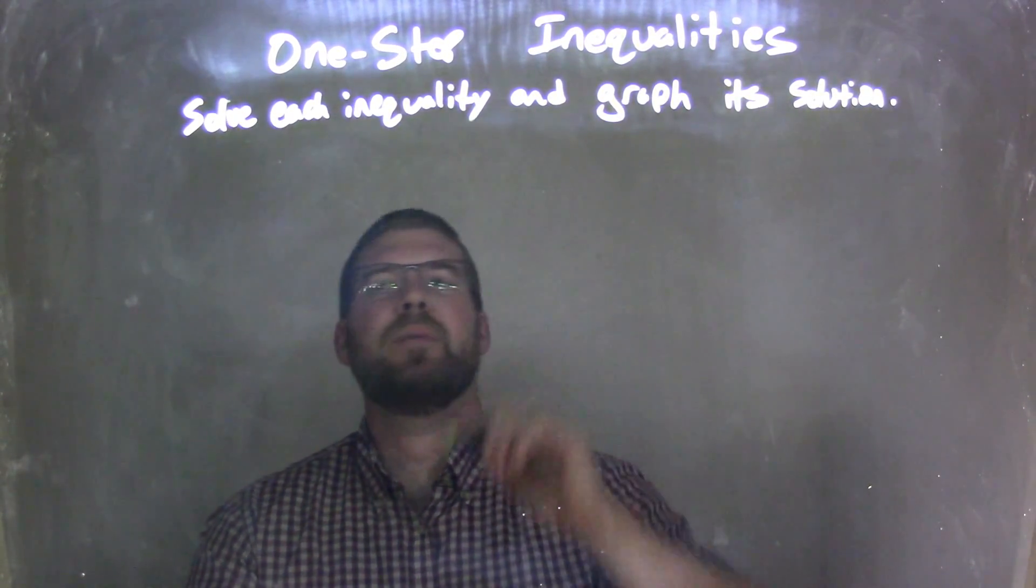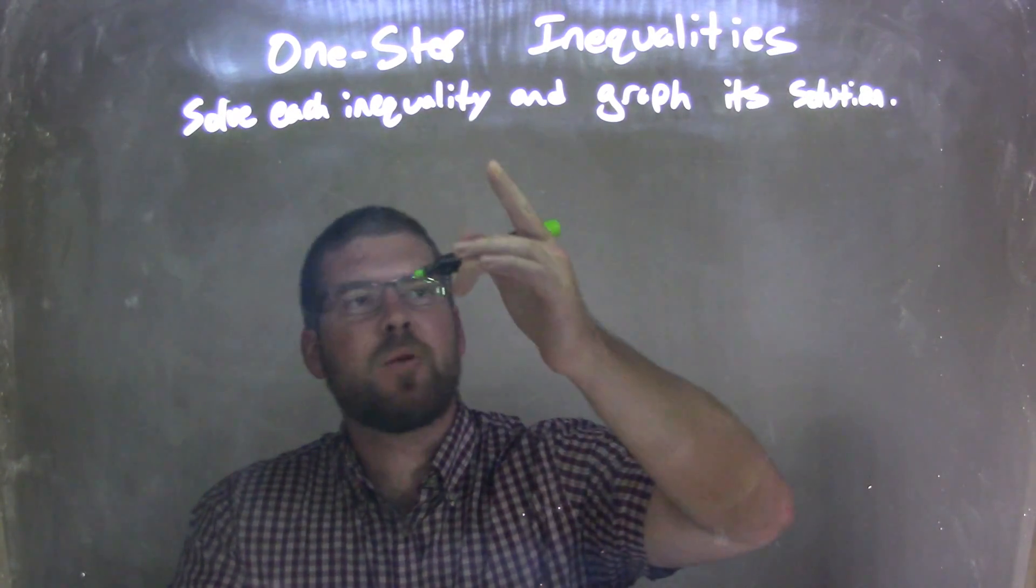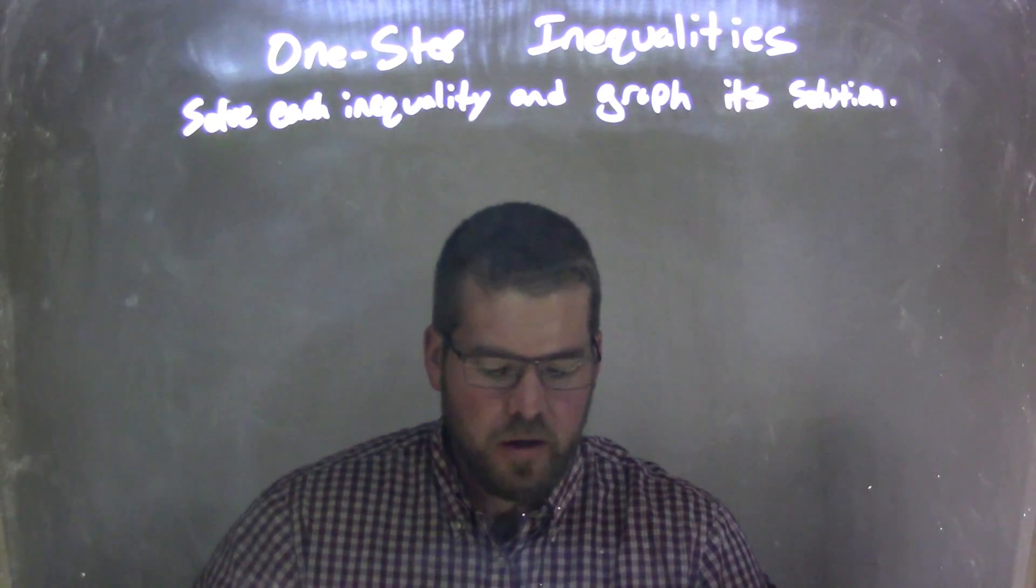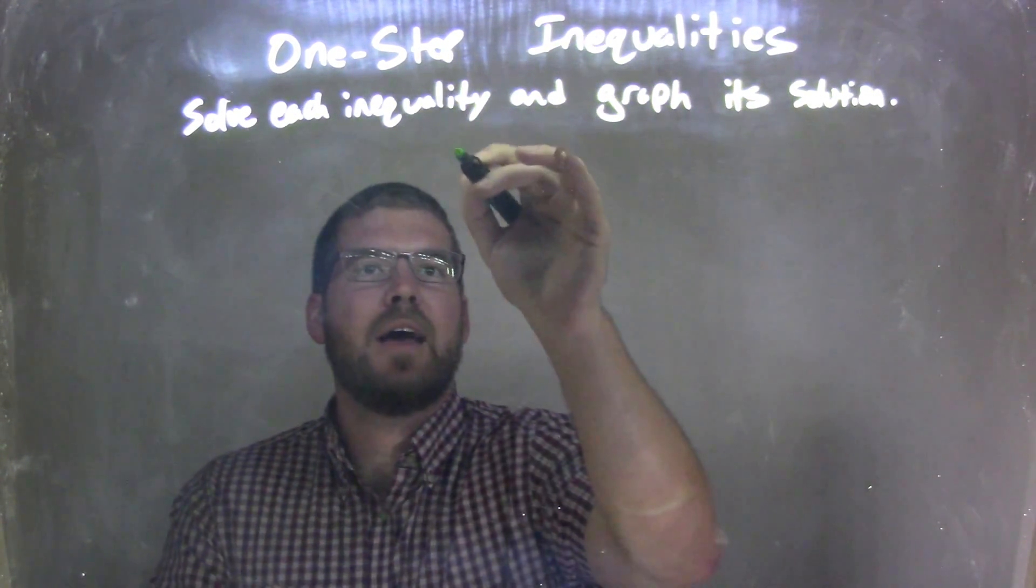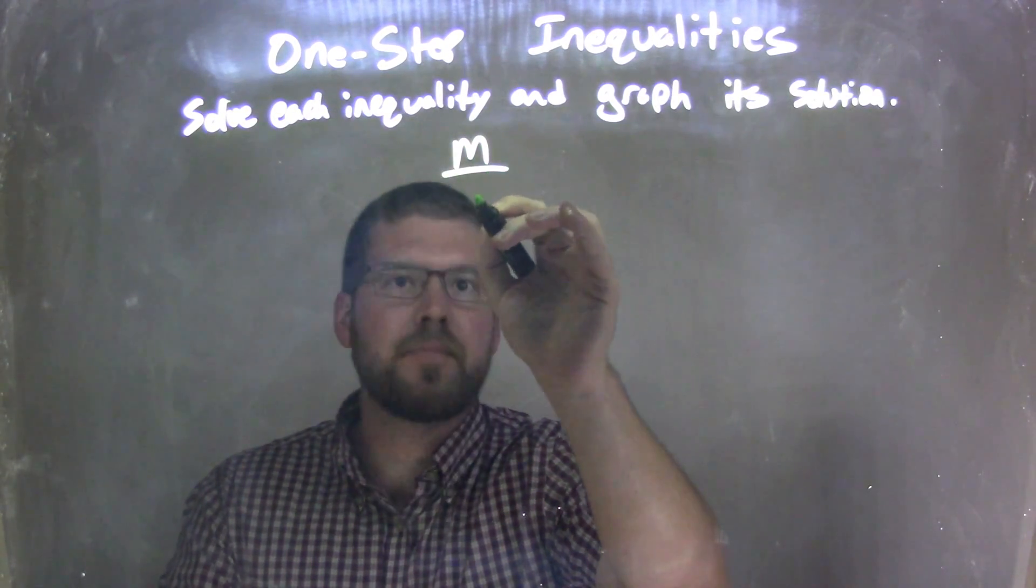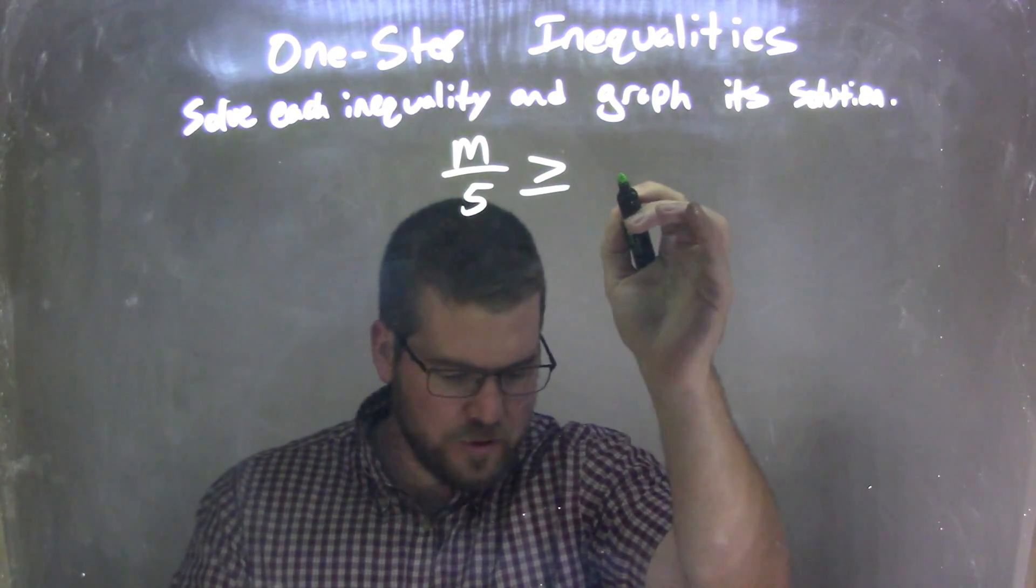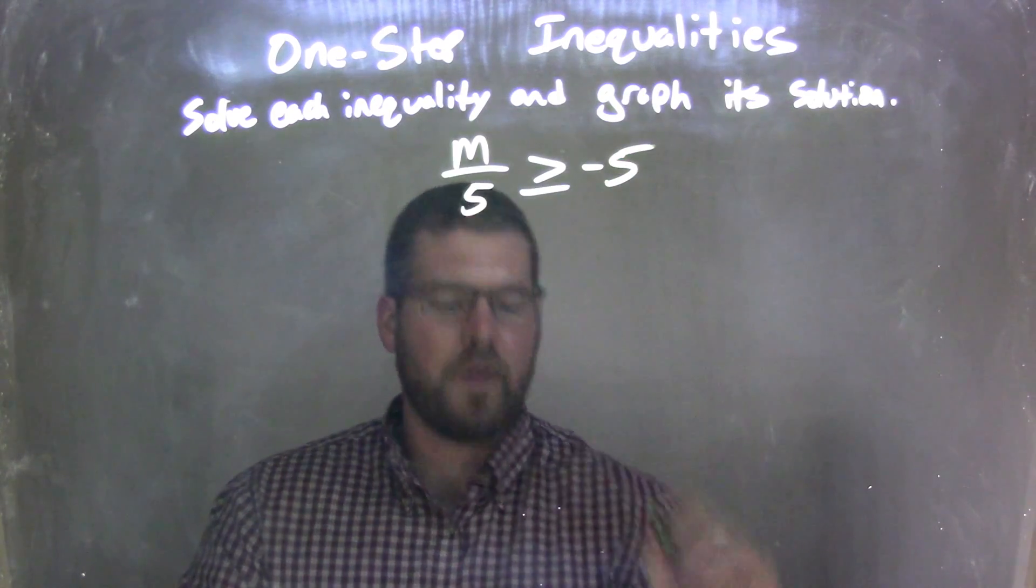Today we're going to learn about one-step inequalities, and we're going to solve each inequality and graph its solution. So if I was given this inequality, m over 5 is greater than or equal to negative 5.